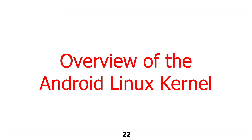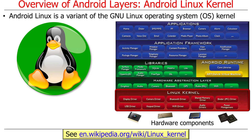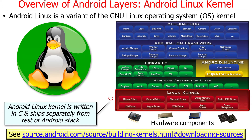Next topic: the Android Linux kernel. Essentially this is a variant of the GNU Linux operating system kernel. The Linux kernel is written in C, and the Android Linux kernel is also written in C. It ships separately from the rest of the Android stack. The primary reason is that they wanted to radically differentiate the source code licensing model for GNU Linux from the other parts of the Android stack.